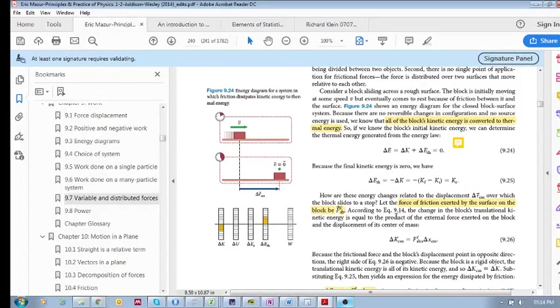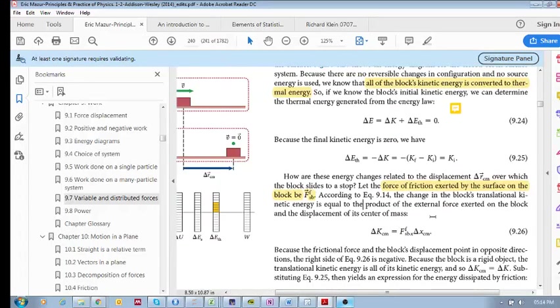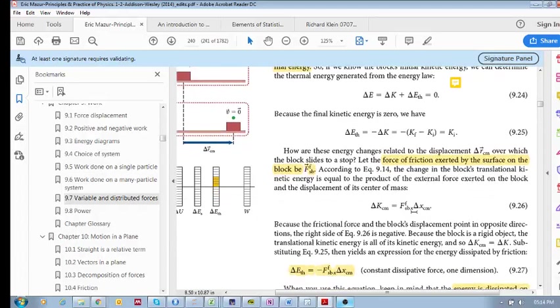Now, according to 9.14, the translational kinetic energy change is equal to the external force exerted on the block times the displacement of its center of mass. So this displacement of the center of mass is obviously this, is what we're talking about.